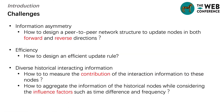There are some challenges for preventing information asymmetry from co-evolution. How to design a peer-to-peer network structure to update the nodes in both forward and reverse directions. During the co-evolution process, a node will interact with a large number of nodes. For each interaction, it is inefficient for a node to update all nodes it has interacted with. How do we design an effective update rule? We need a better way to measure the contribution of interaction information to these nodes. The impacts of interaction information are different at different times, and its impacts on each node are different as well. We need to aggregate the information of the historical nodes with the information of currently interacting nodes to improve prediction performance, while considering other information factors such as time difference and frequency.